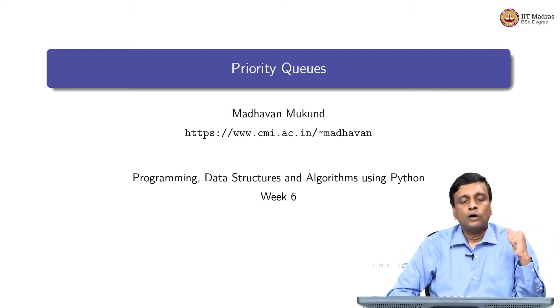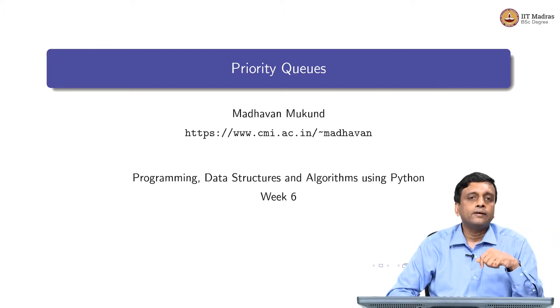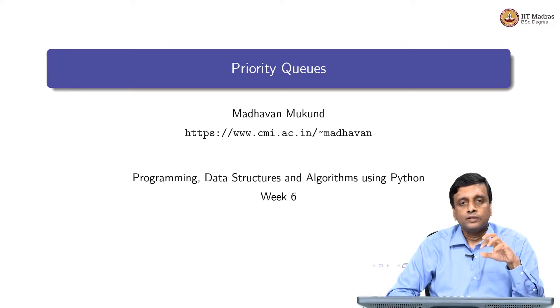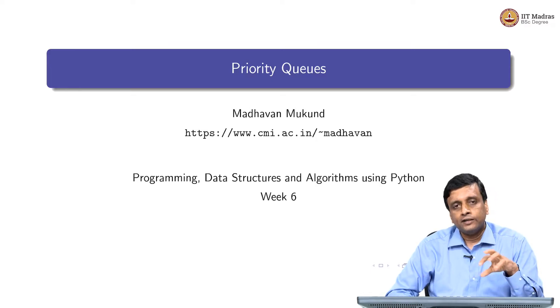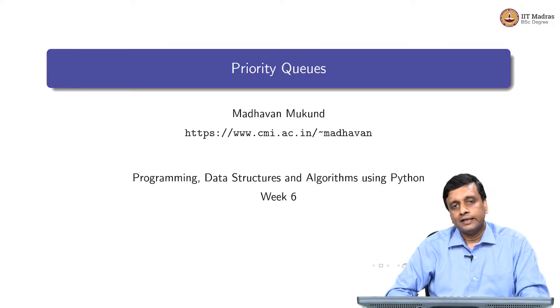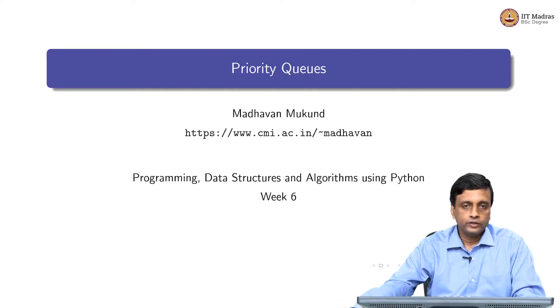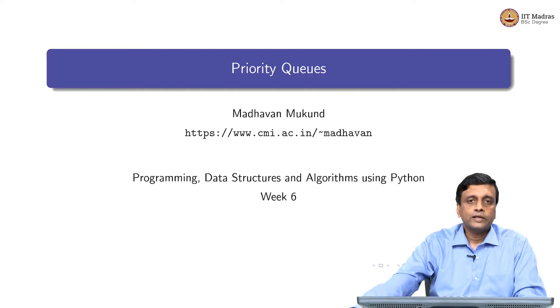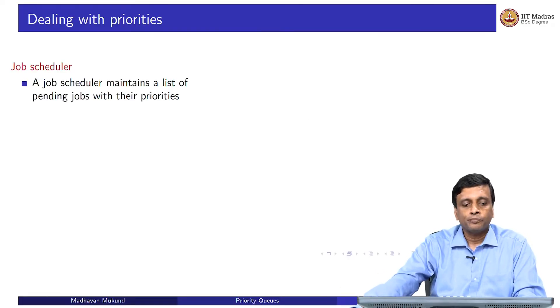What we will look at now is a data structure to handle that problem. Abstractly, although it does not seem to be immediately relevant, this is what is called a priority queue. Let us look at an independent motivation for priority queues.